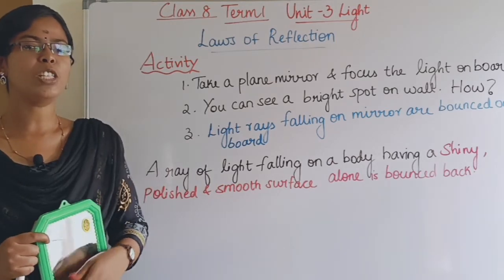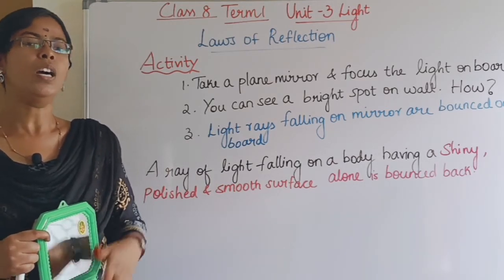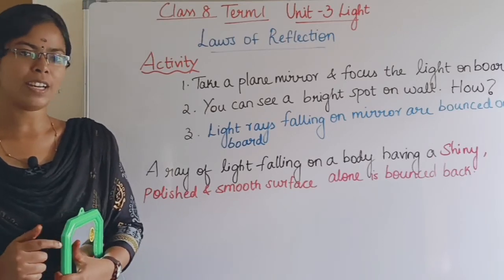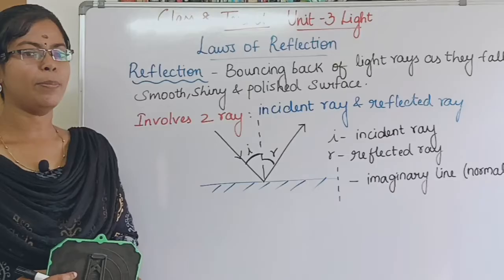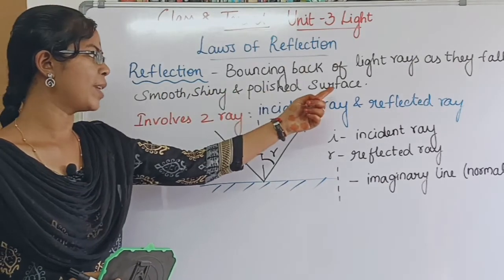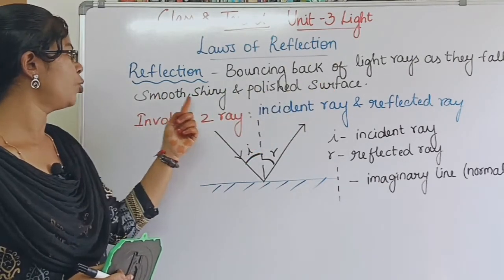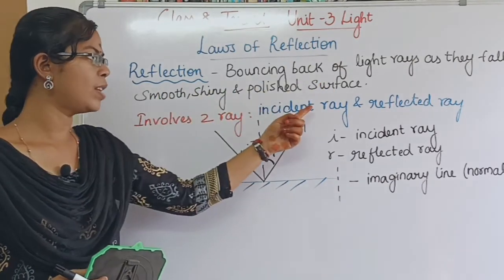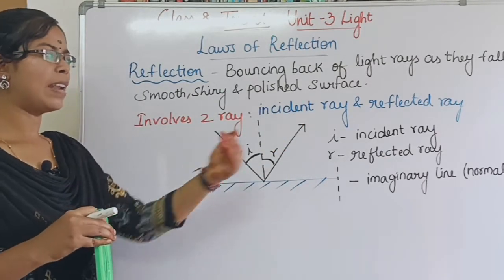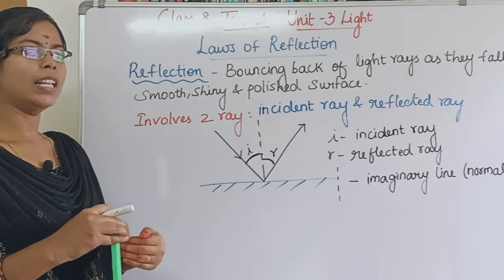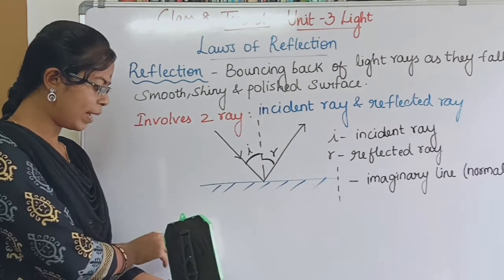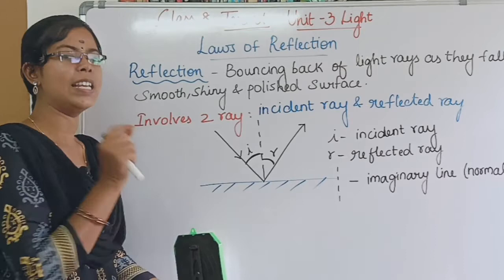Reflection occurs on a smooth surface. The light rays are reflected in the mirror. The definition of reflection is the bouncing back of light rays as they fall on a smooth, shiny and polished surface. So the light rays bounce back off the object. That is called reflection.